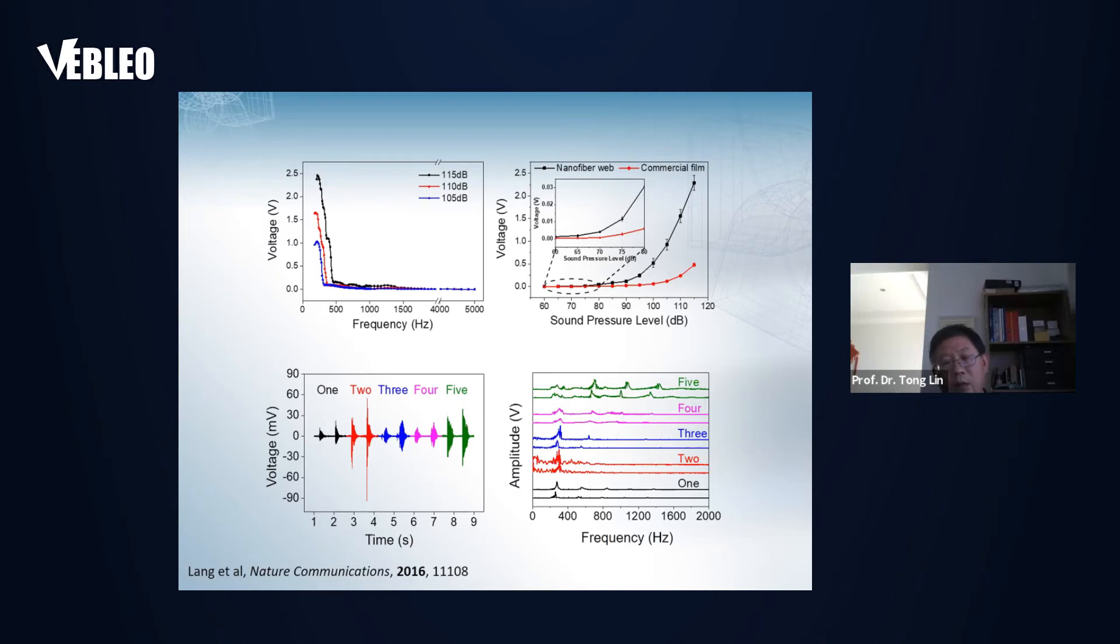According to this property, we thought this nanofiber device can be used as a sound sensor or energy harvester. The two bottom charts show the sound sensing property. When people say one, two, three, four, five in English, each twice in second order, you can see the result like this. If we use a mathematical method to convert that into a frequency-related wave function, the signal from the same pronunciation has a very similar wave function, but they are different between different pronunciations.